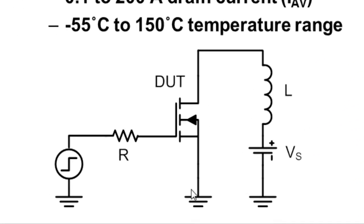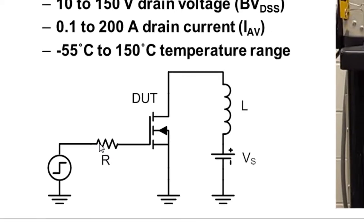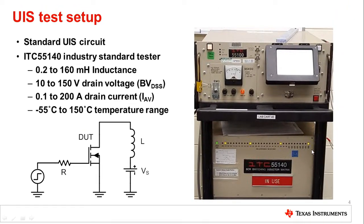Here in the lower left corner you see a UIS test circuit setup. We have a voltage source in series with an inductor L, also in series with the device under test — in this case our MOSFET. And over here you have the gate controller of the FET in series with a gate resistor. On the right, taken from our characterization lab, is our LTC 55140 tool. This is the tool that we use to characterize the UIS rating of the FET, and that capability is then used to determine not only the FET datasheet rating, but also the value used to screen the FETs during final test.